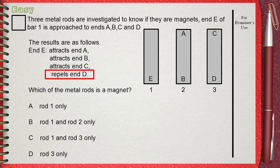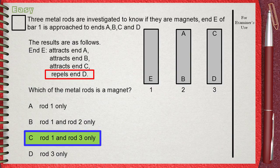2 did not make any repulsion with any one of the two ends, this means it's an iron rod. So the answer is C: Rod 1 and 3 only are the magnets.